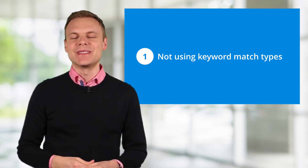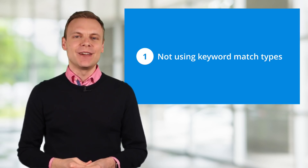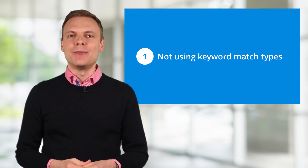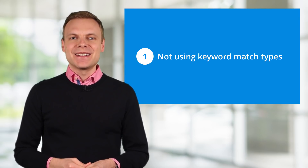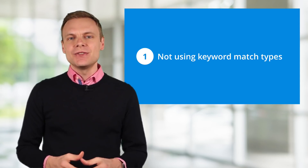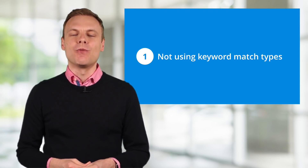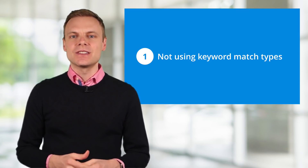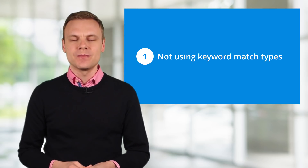Mistake number 1 is not using keyword match types. There are 5 main keyword match types that you need to be aware of. These are broad match, broad match modified, phrase match, exact match, and negative match. If you're just using broad match keywords, then your ads will appear on a wide range of keywords, which means you'll need lots of negative keywords to ensure your ads appear for the most relevant terms.